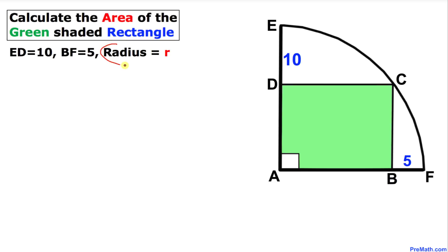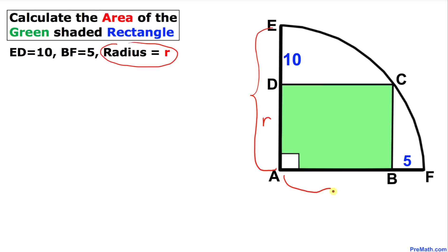Furthermore, let's assume that the radius of this quarter of a circle is R. That means this radius is R, and likewise this radius is R as well.